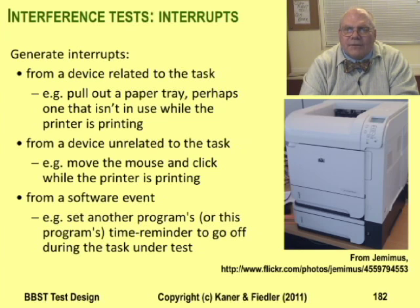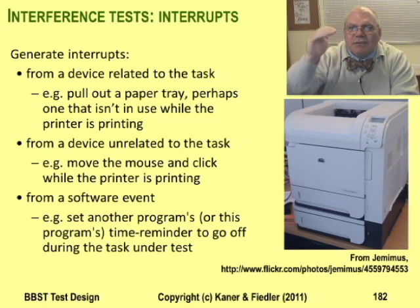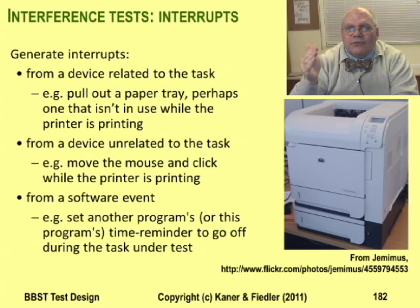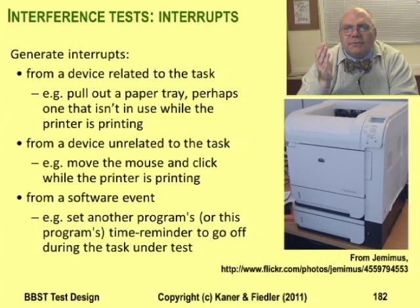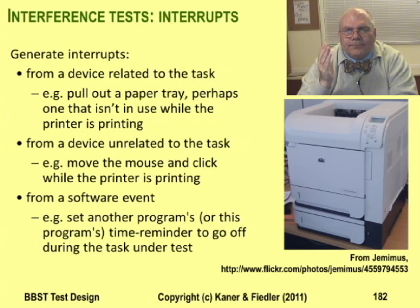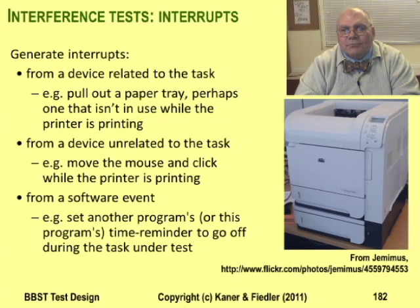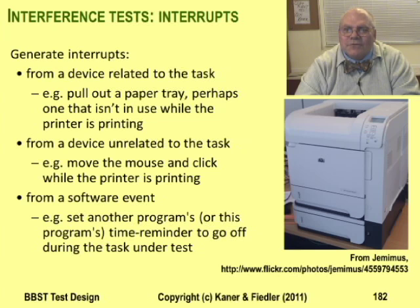Something's happening in this environment that can affect you. For instance, here's a printer with two paper trays. Set it to pull paper from the top tray. While it's printing, pull out the bottom tray and see what happens — that's going to generate an interrupt. The interrupt is a message from the printer to the computer that the paper tray has come out. The operating system might forward this message to the program that's printing. What if the program misinterprets the message and thinks the top tray is out and therefore there's no paper? If you can confuse the program that way, you can confuse it further.